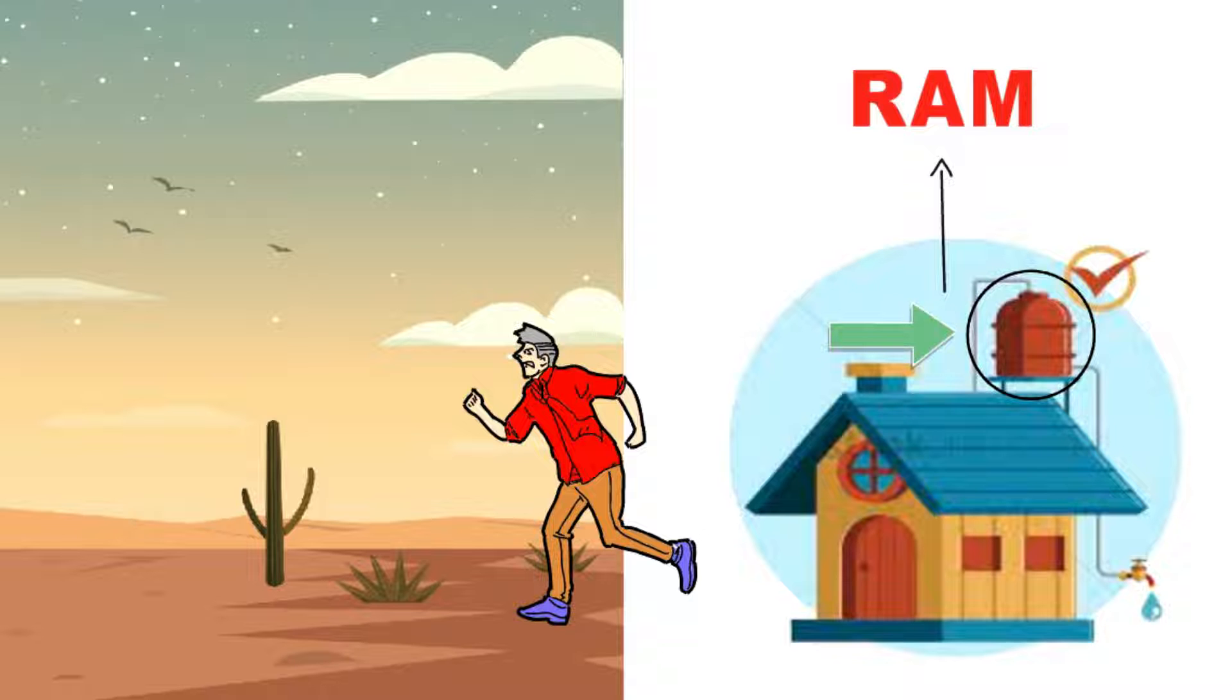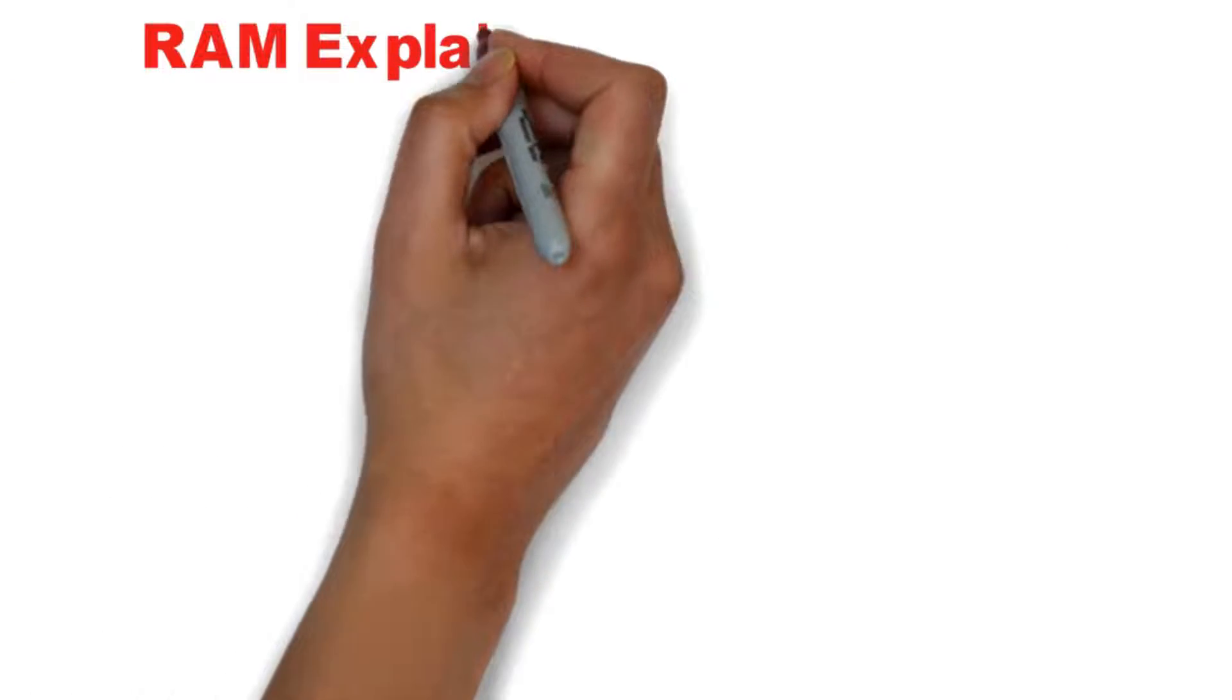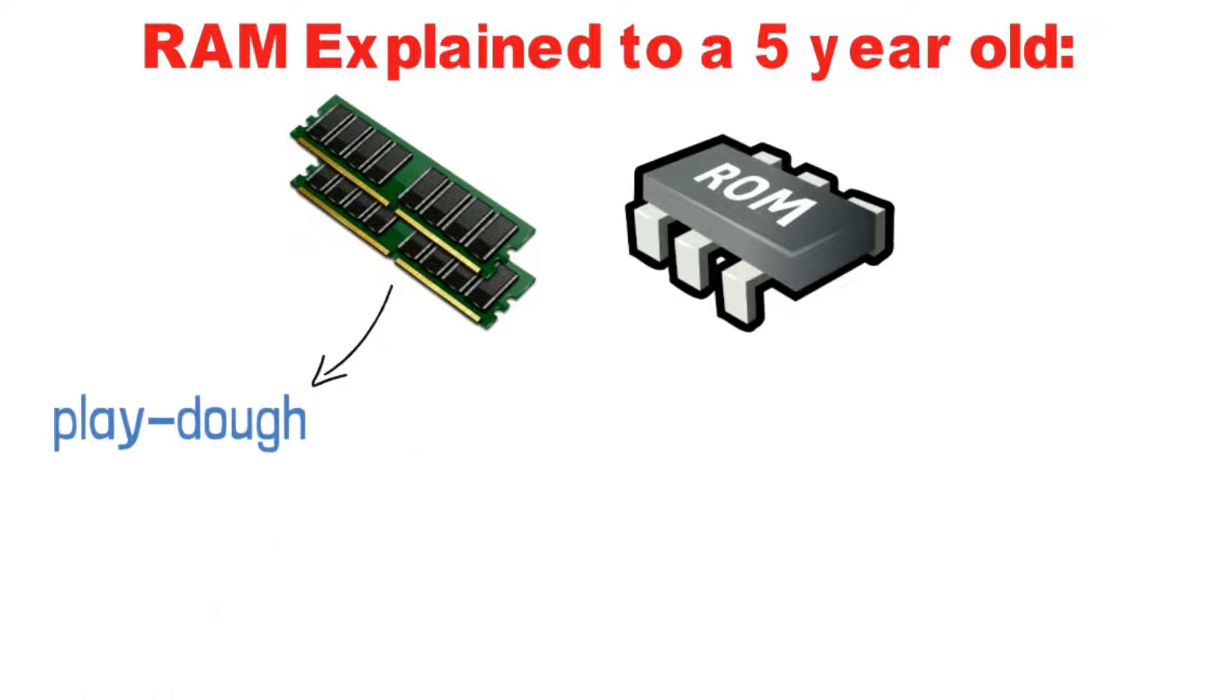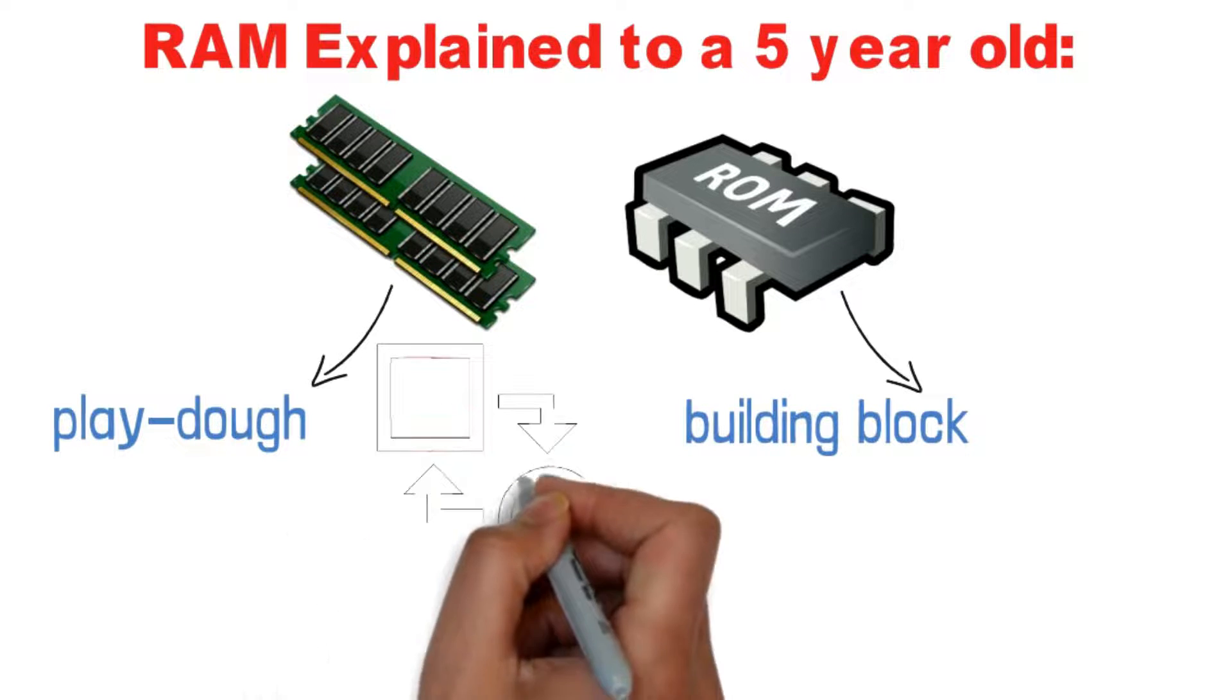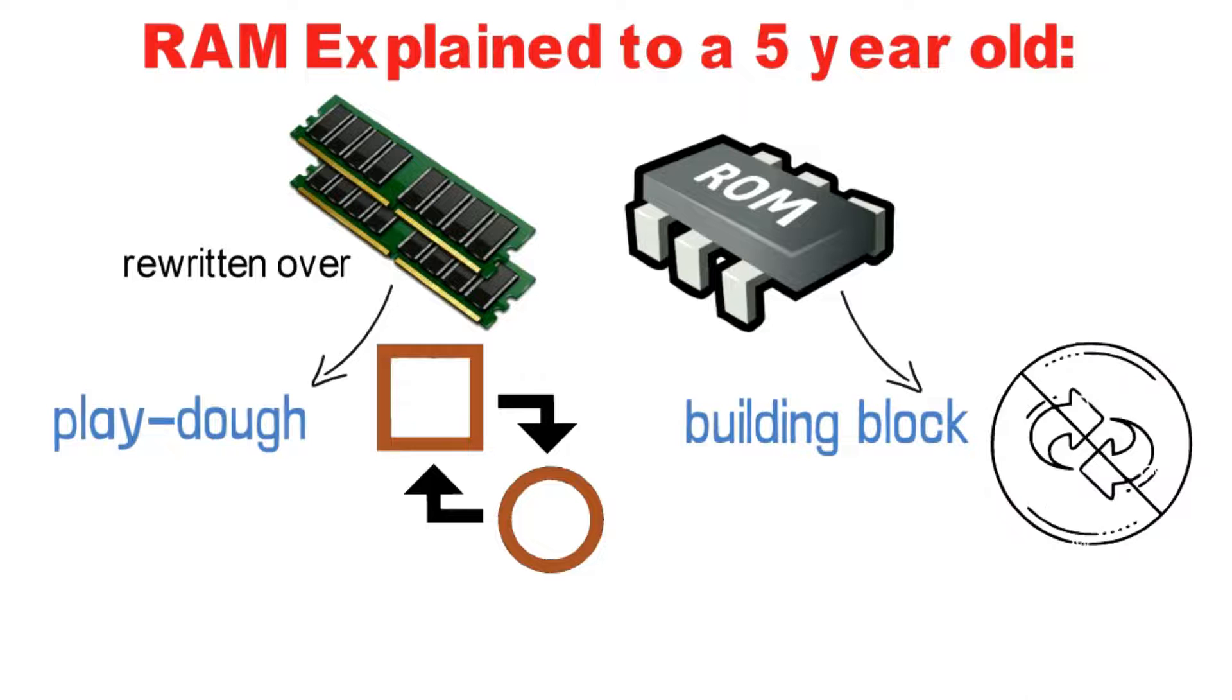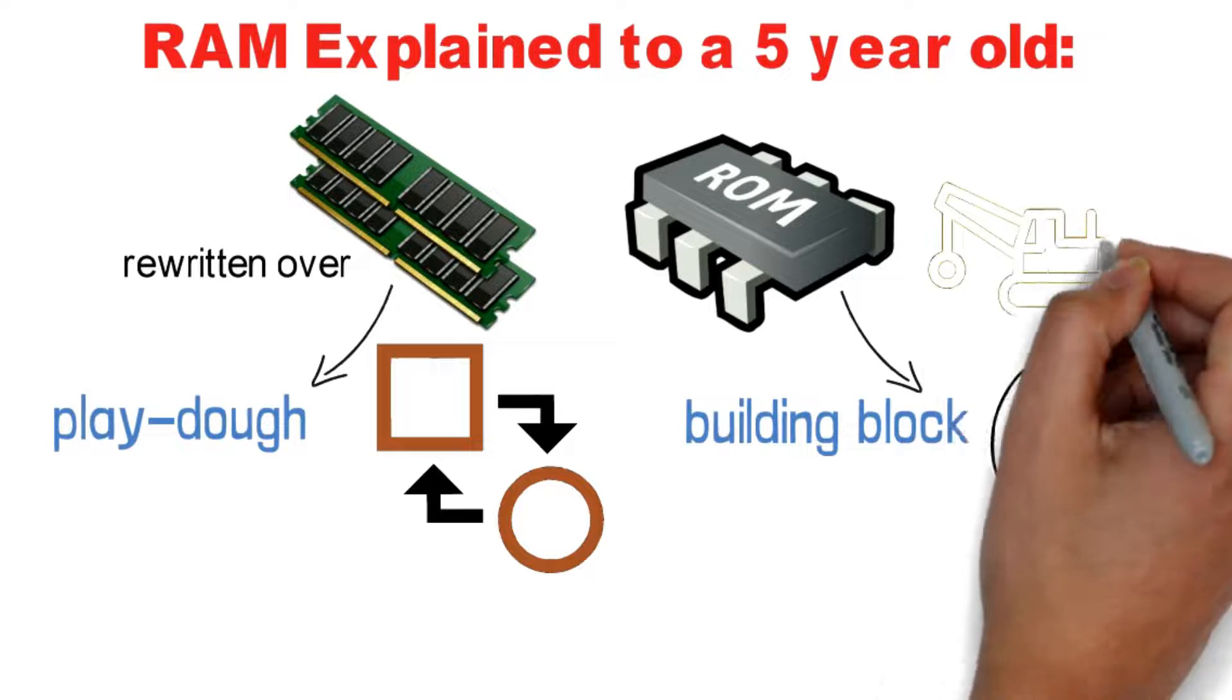RAM explained to a five-year-old. I would use an analogy. RAM is like Play-Doh, as ROM is like a building block. Play-Doh can be repeatedly reshaped to reassemble a different object, just as RAM can be rewritten over and over using different data. Building blocks are solid and cannot easily be changed. In fact, changing them destroys the whole object.